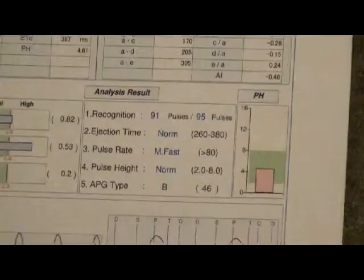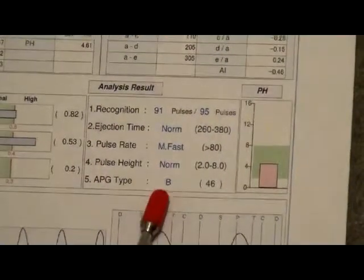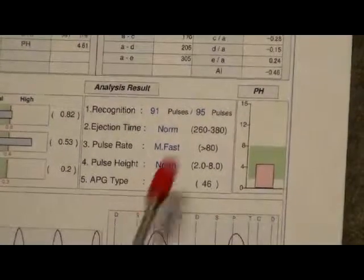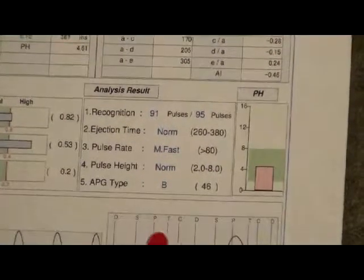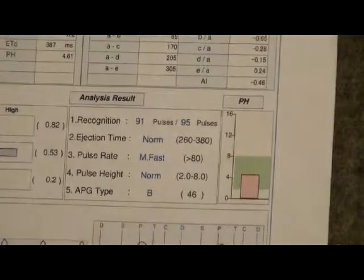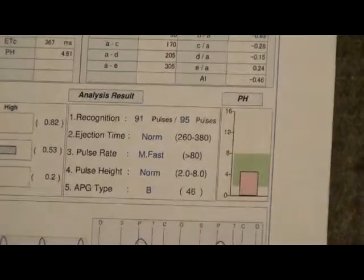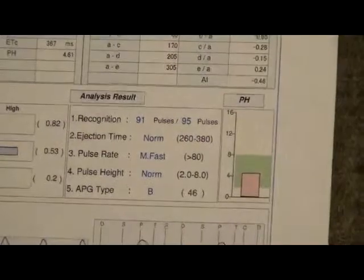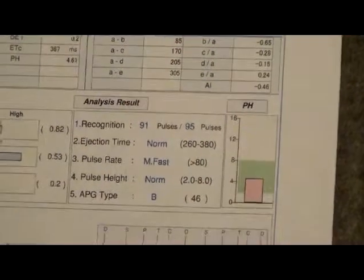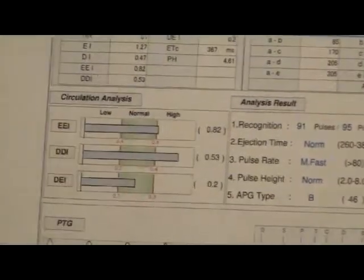We're going to come down to the pattern right here at the bottom, and we're going to call it something between A and G — up here at C, for example. We get a particular number in the brackets, but that's not considered to be the biological age. Biological age has to be calculated, and we show that when we get into the interpretive guide. Here's a type B, and again the number in the brackets is not the biological age.